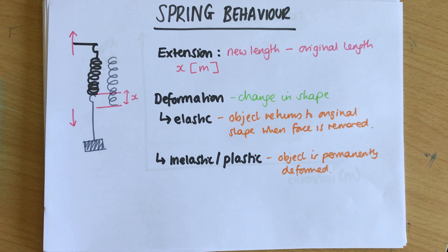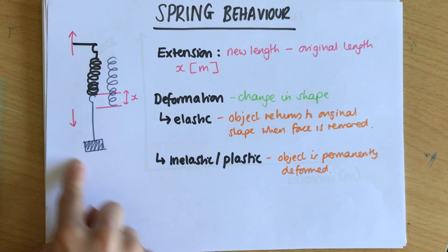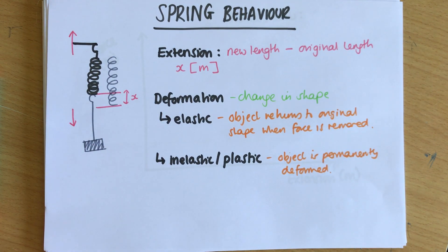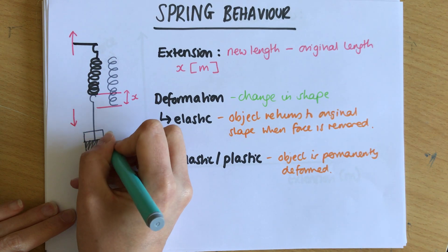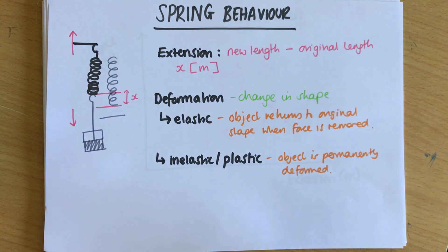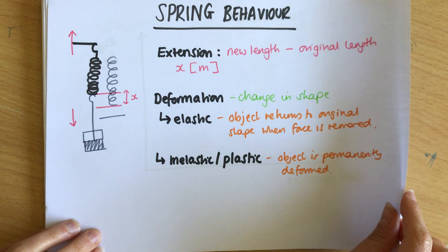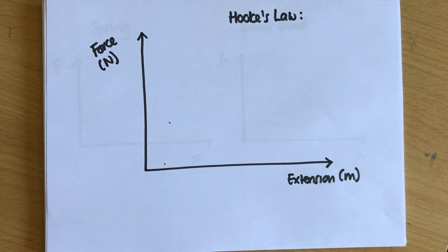Most people who are doing GCSE will have a core practical about this to investigate something called Hooke's law. It involves this setup—a spring and you put a mass on the spring and measure the extension, then you add another mass on and measure the new extension. As you add more masses the spring gets longer and you keep measuring the extensions to see if it follows Hooke's law.